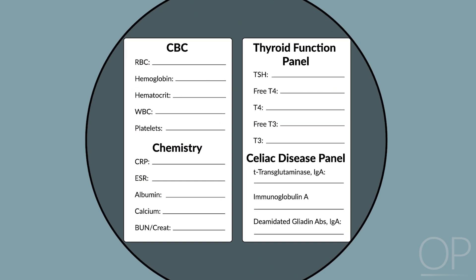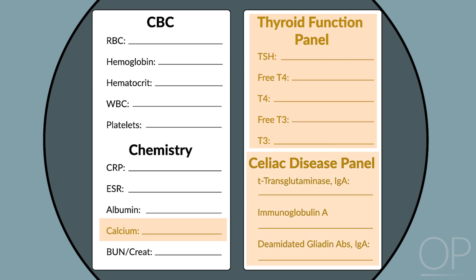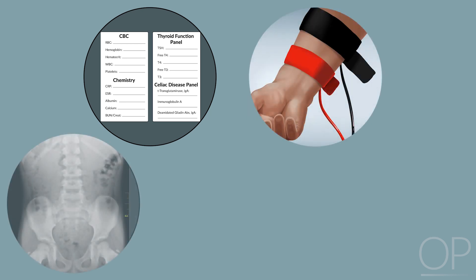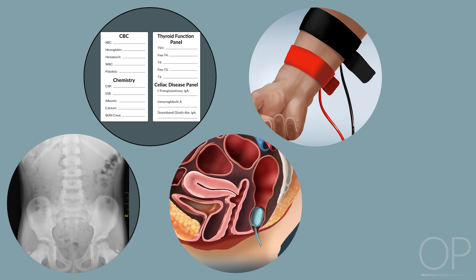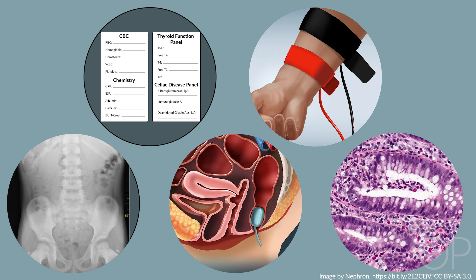If an organic etiology is suspected, perform an appropriate diagnostic workup, which may include thyroid studies, a calcium level, a celiac disease panel, sweat chloride test, abdominal x-ray or barium enema, anal rectal manometry, and rectal suction biopsy.